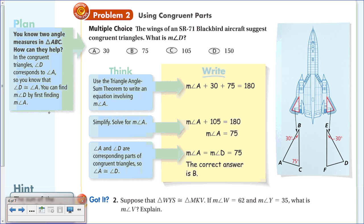Problem 2: Using Corresponding Parts. Here's a picture of an SR-71 Blackbird. The wings of the SR-71 suggest congruent triangles because an airplane has symmetry—if it didn't, it wouldn't fly straight. We know this part of the wing is congruent to that part of the wing, but they ask for the measure of angle D, which wasn't given directly.